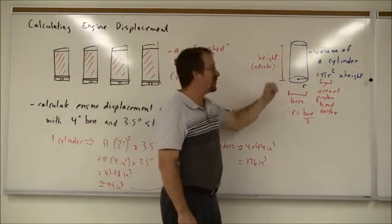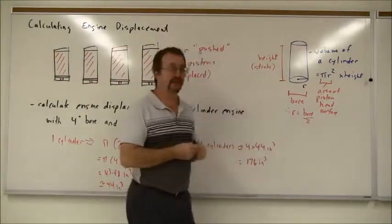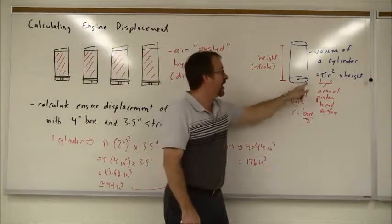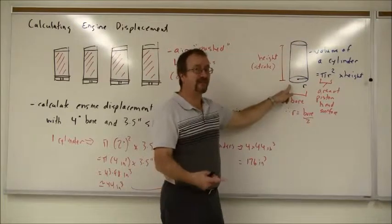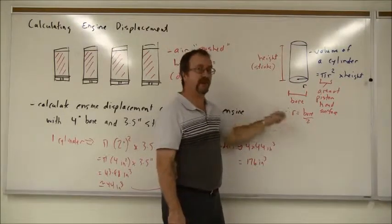So the volume of the cylinder is pi r squared times the height. Now in the case of our piston and cylinder, the bore of the piston is the diameter of that cylinder. But we don't want the diameter, we need the radius. The radius is half the diameter, so radius is the bore divided by two.